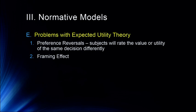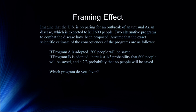This leads to the framing effect, illustrated by the Nobel Prize-winning work of Tversky and Kahneman. Imagine the U.S. is preparing for an outbreak of an unusual disease expected to kill 600 people. If program A is adopted, 200 people will be saved. If program B is adopted, there is a one-third probability that 600 people will be saved and a two-thirds probability that no people will be saved. Which program do you prefer?